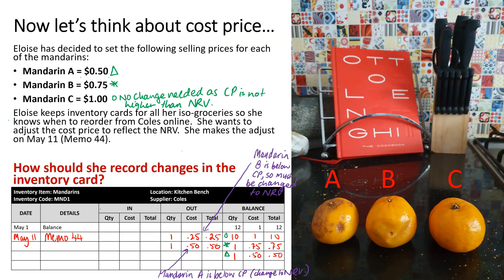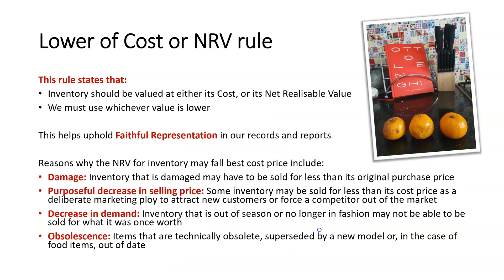You can see that Mandarin A is below cost price, so we've changed it to the NRV. We've also changed Mandarin B because it's dropped below cost price. We've made no change to Mandarin C because the cost price is not higher or lower than NRV. So, lower of cost or NRV: inventory should be valued at either cost price or NRV — whichever is lower. This helps us uphold faithful representation.